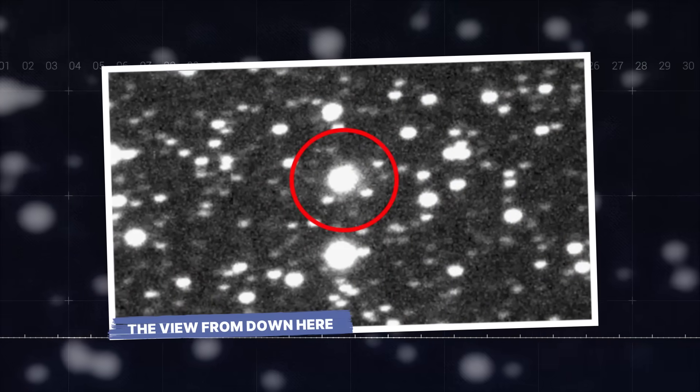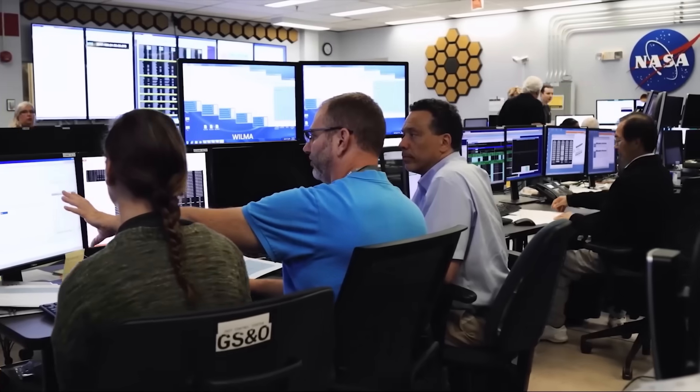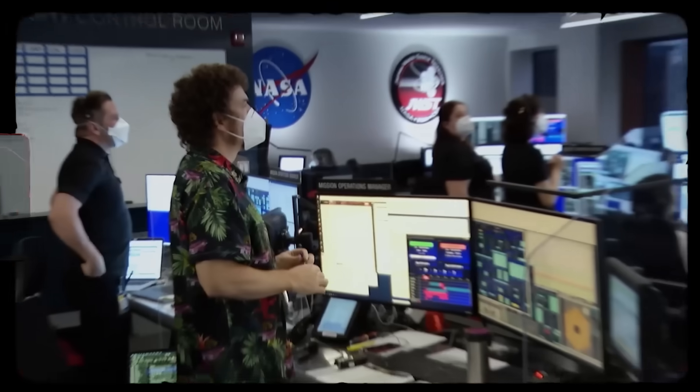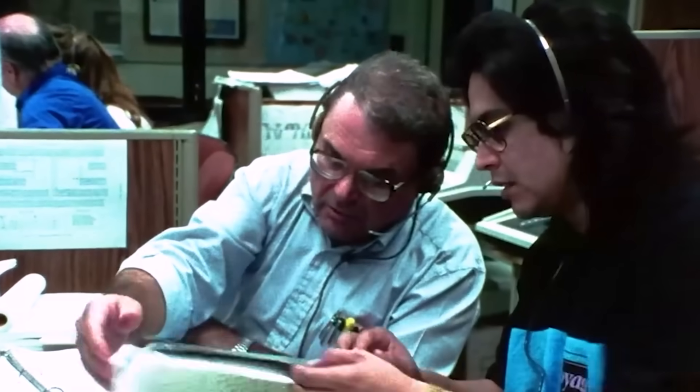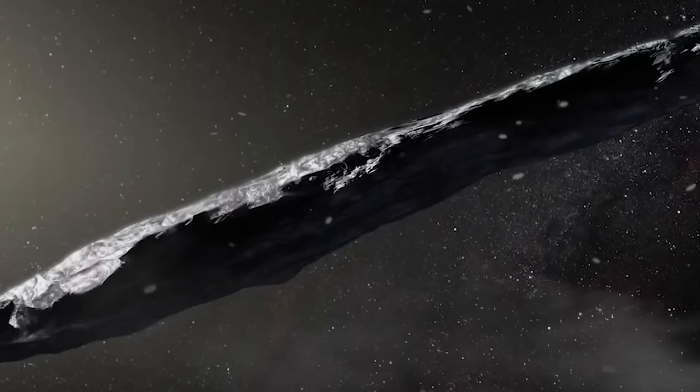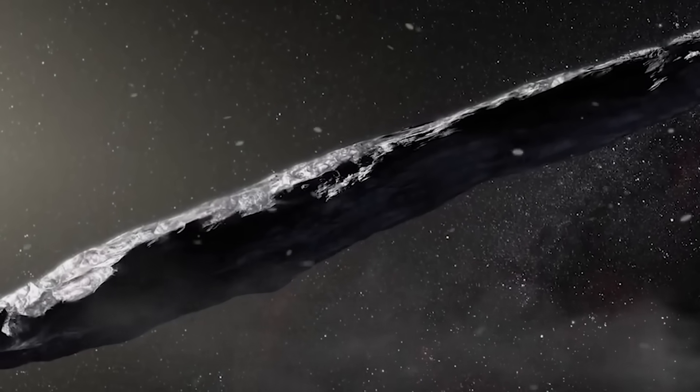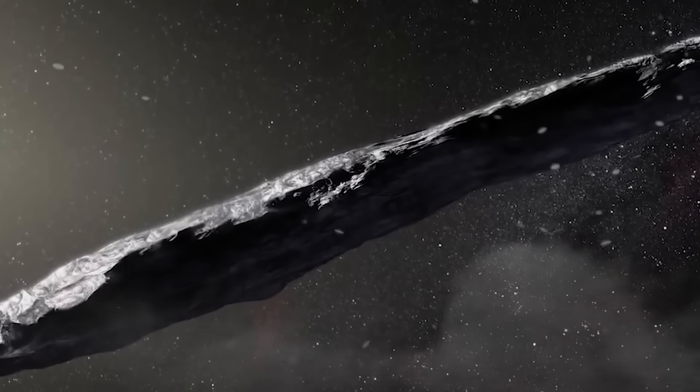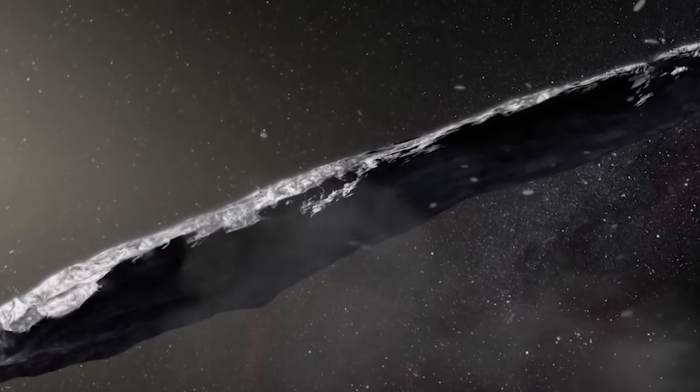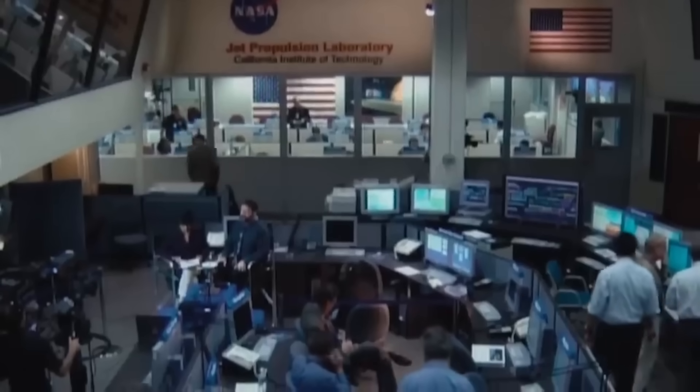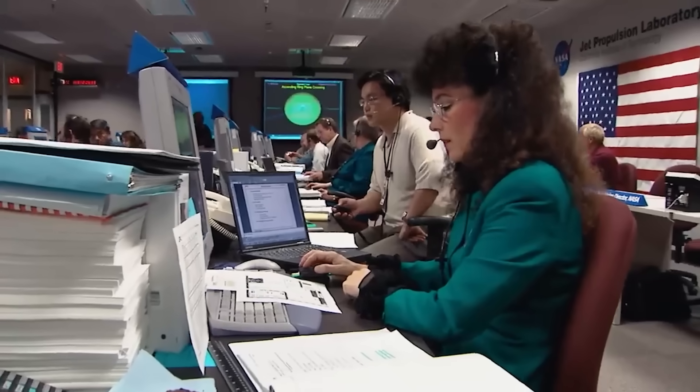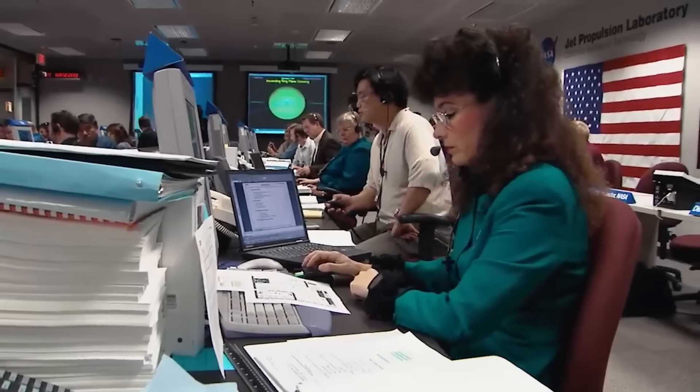The view from down here. Let's just take a step back for a second. The thing is, when you strip away all the complex math and the scientific jargon, the situation is actually pretty simple to understand and deeply unsettling. An enormous object, born in another solar system, is currently flying through ours. And it's moving in a way that the smartest people on the planet using our most powerful instruments cannot explain.